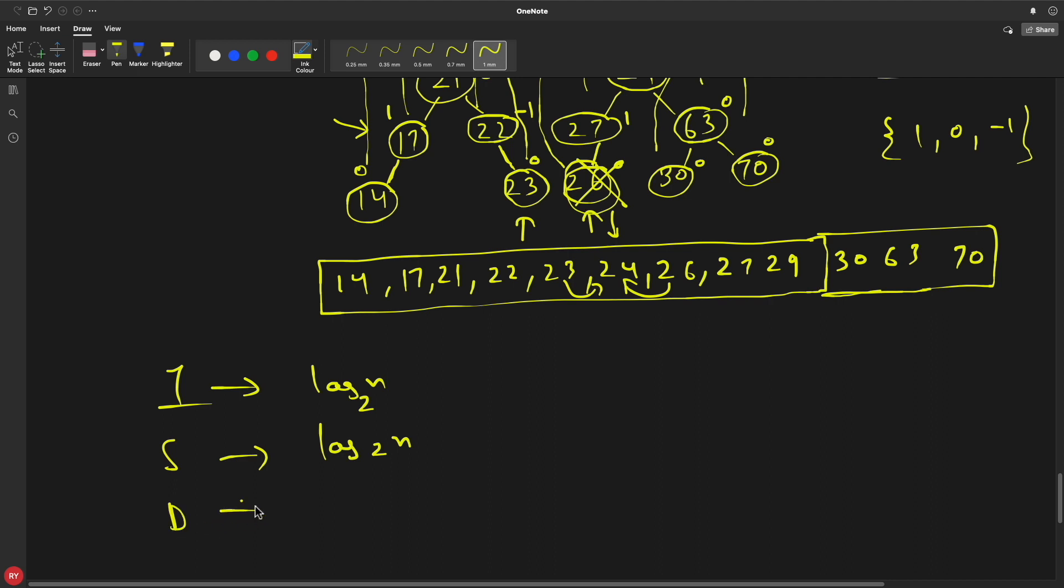And similarly goes for the delete, log base 2 n. So here worst case complexity is also log base 2 n. This is really good, right?